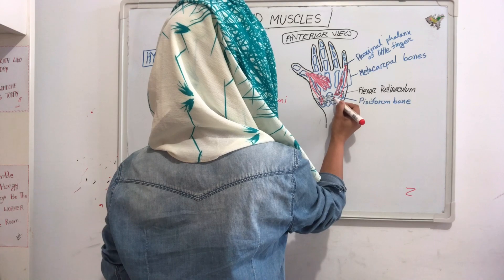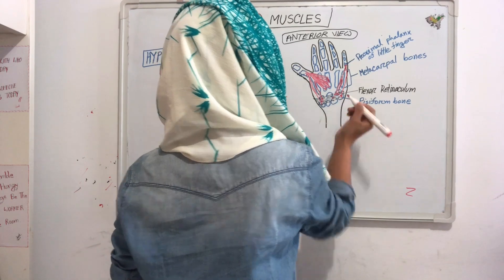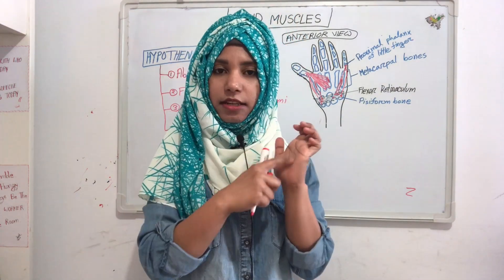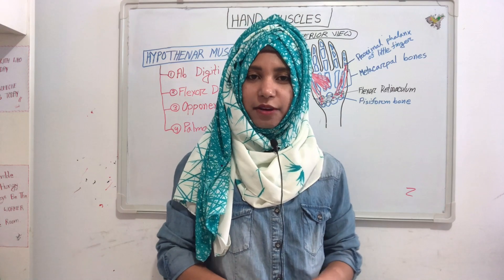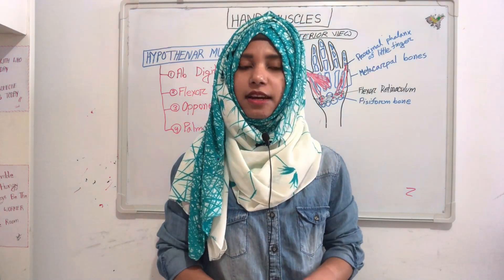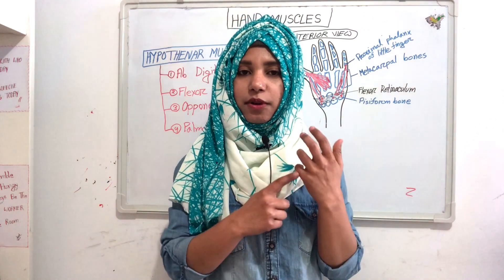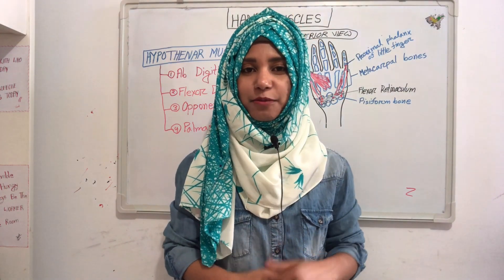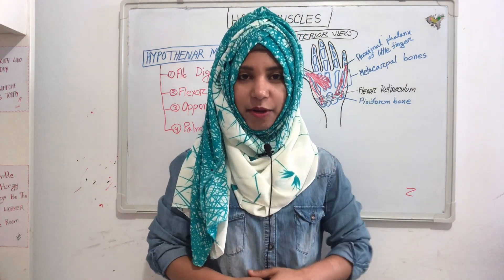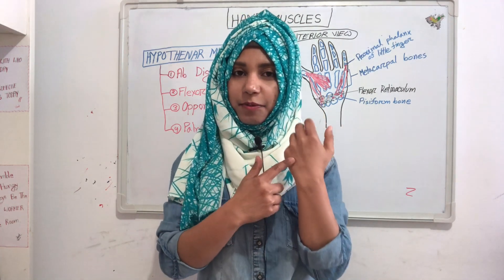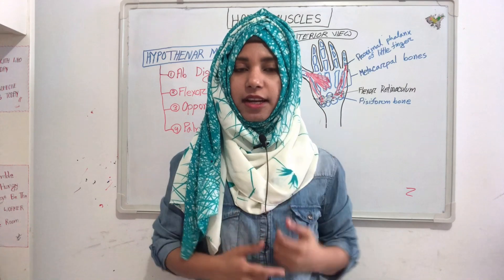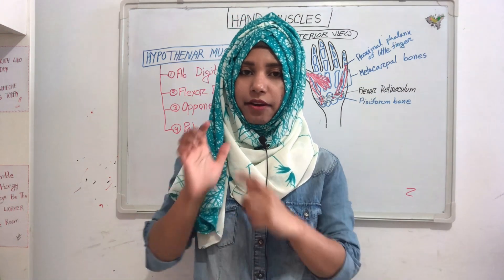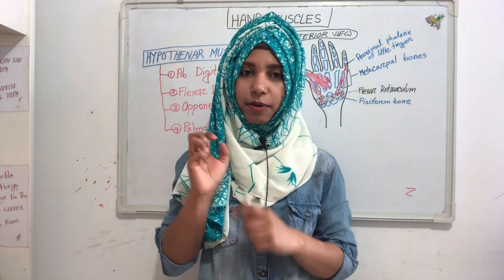Then our palmaris brevis — its origin is from the flexor retinaculum, and its insertion is into the skin of the palm. Now the actions of our hypothenar muscles: abductor digiti minimi helps abduction of the little finger, flexor digiti minimi helps flexion of the little finger, opponens digiti minimi pulls the fifth metacarpal bone forward as in cupping the palm, and palmaris brevis wrinkles the skin to improve the grip of the palm.